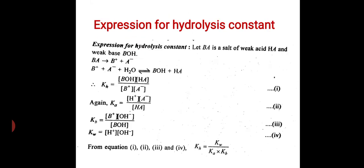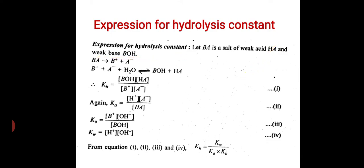Now we will derive an expression for hydrolysis constant, which is shown by KH. Let BA be a salt of weak acid HA and weak base BOH. That BA gives us B+ and A−.